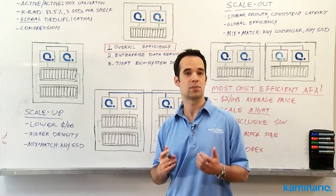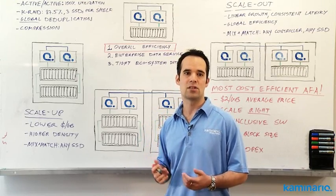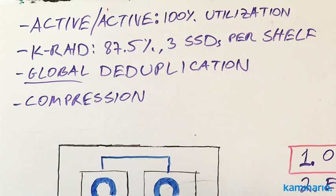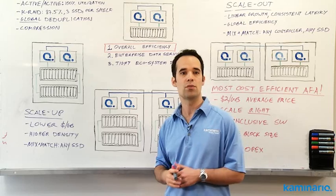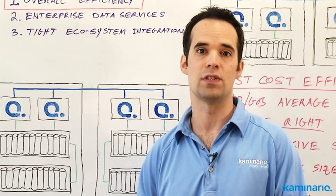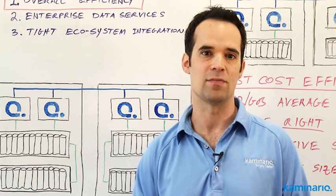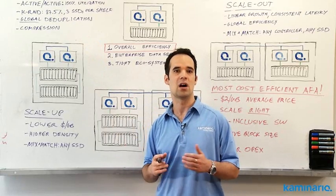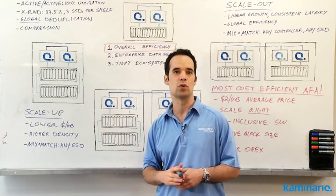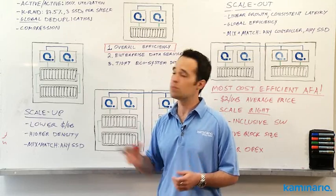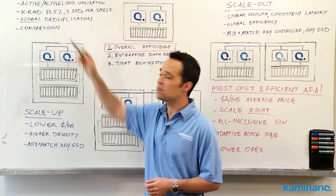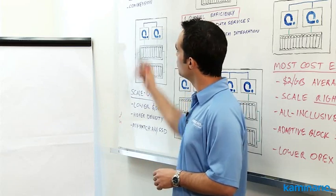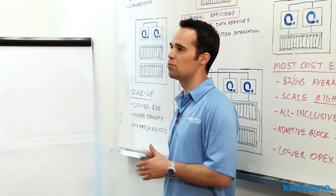So already in our initial configuration, we can see how our SPEAR architecture allows us to be very efficient with our cost structure. We talked about active-active controllers that are both 100% utilized instead of only 50% utilization in active-passive architectures. Our proprietary K-rate has the highest utilization of 87.5% and can still support up to 3 SSD failures per SSD shelf. We have global in-line deduplication and in-line compression.